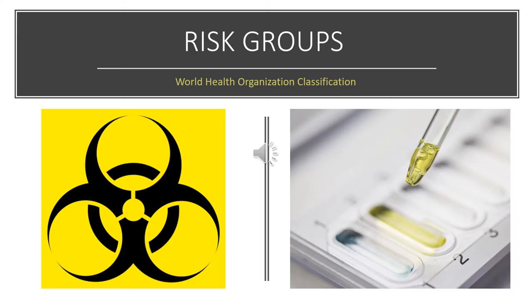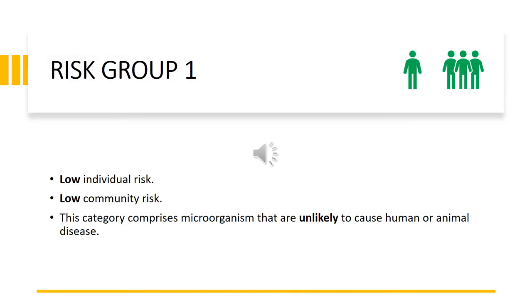The World Health Organization has categorized biological agents into four risk groups. Biological agents categorized under risk group one pose a low individual risk and a low community risk. This category comprises microorganisms that are unlikely to cause human or animal disease.